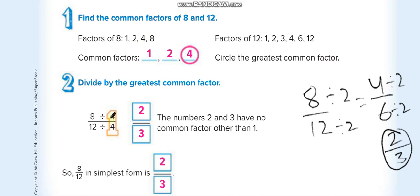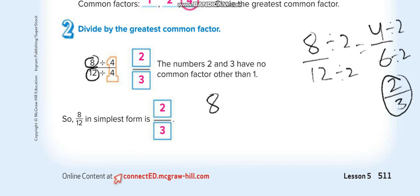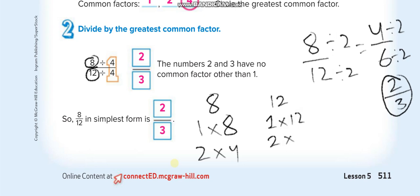How do you know to divide by 4? You can find the greatest common factor. Find the factor pairs of 8 and 12. Factor pairs of 8: 1 times 8, and 2 times 4 — so the factors are 1, 2, 4, 8. Factor pairs of 12: 1 times 12, 2 times 6, 3 times 4 — so the factors are 1, 2, 3, 4, 6, 12.